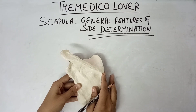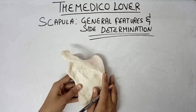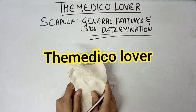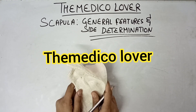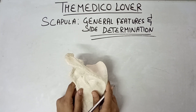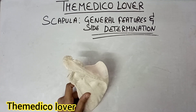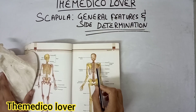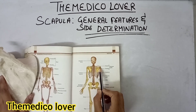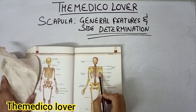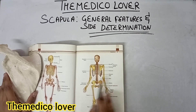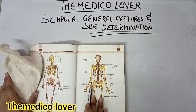Hello everyone, welcome to my channel The Medical Lover. Today we'll be learning about the scapula, its general features, and its side determination. The scapula is the flat triangular bone which is present on the posterior lateral aspect of the thoracic cage.